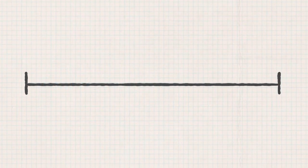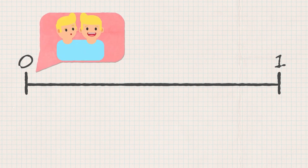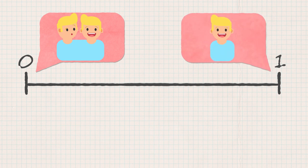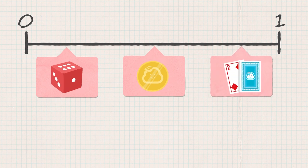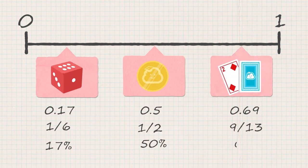A probability scale ranges from zero to one. Zero is something impossible, like growing an extra head. One is certain, like not growing an extra head. Everything else is in between. Probability can be shown as a decimal, fraction, or percentage.